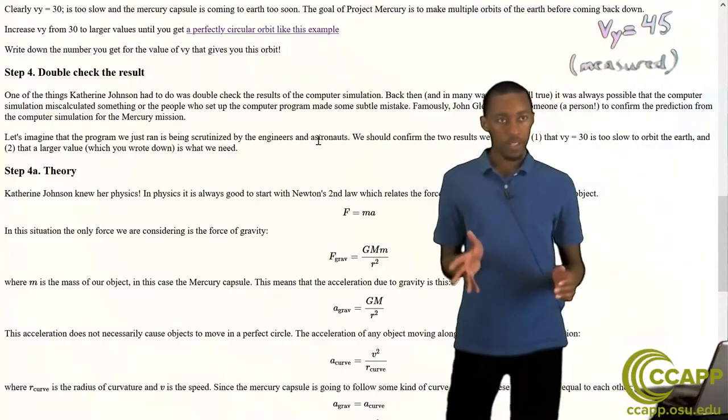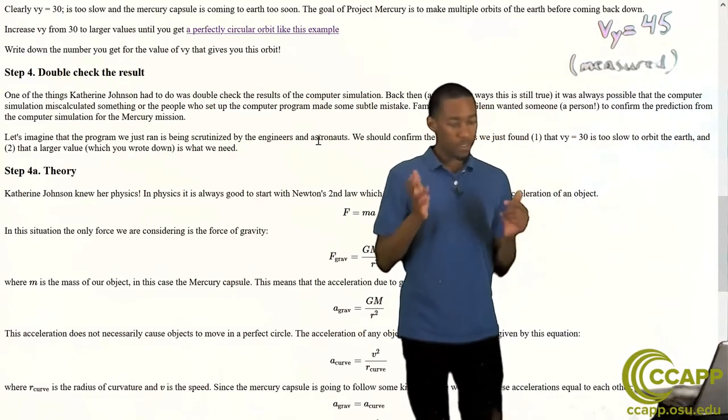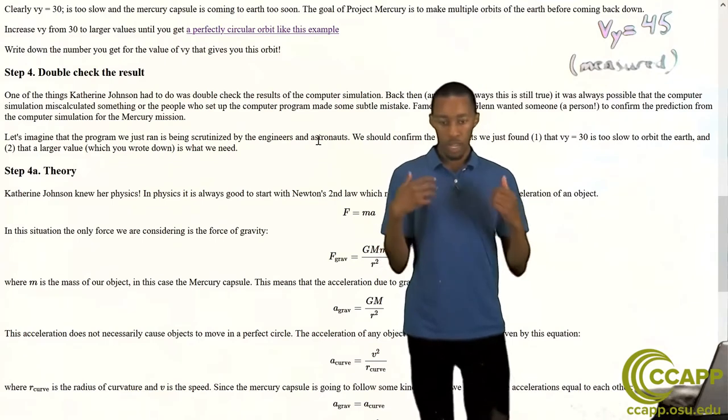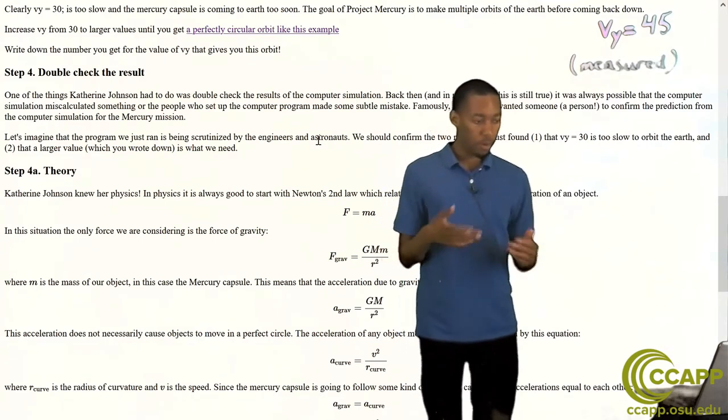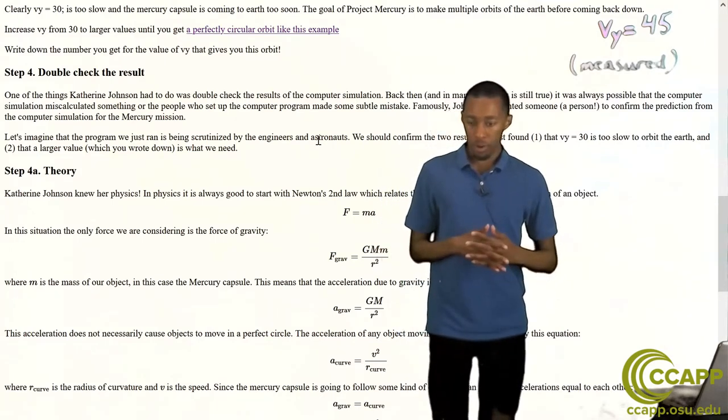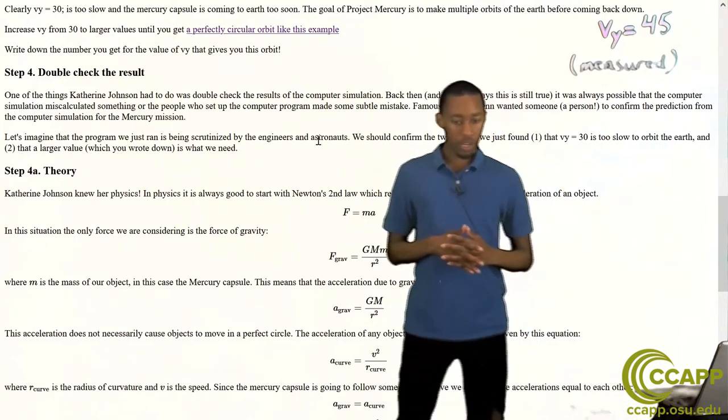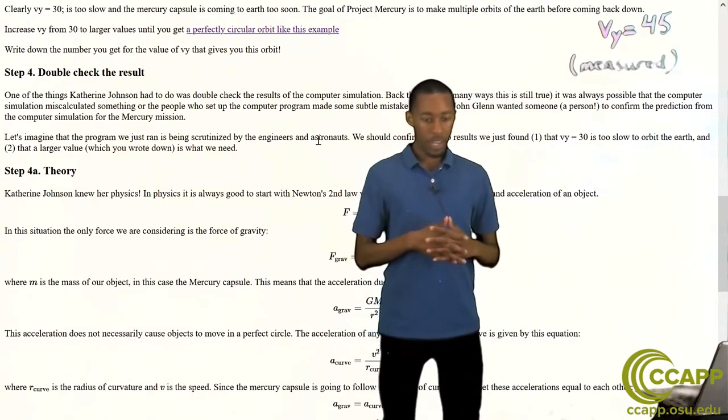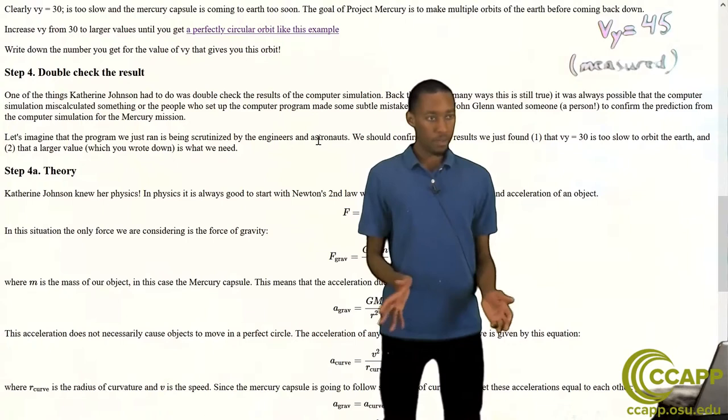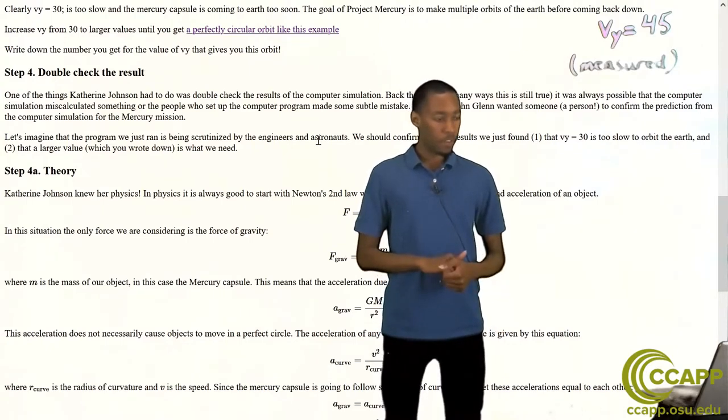So in step four they want us to double check the result. Now why is this important? In the days of the Mercury program, computers were not exactly new but they were being used for these kind of intense mathematical computations for some of the first times.